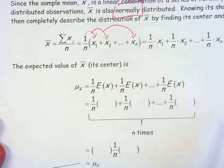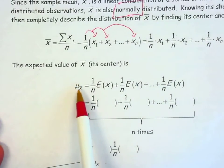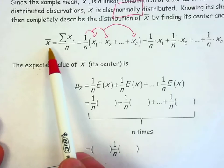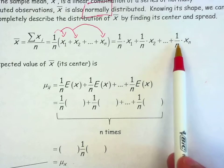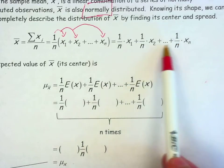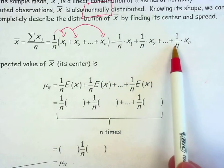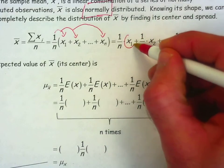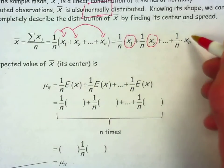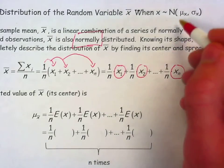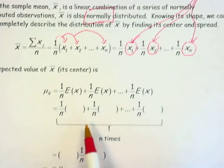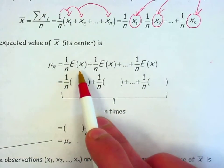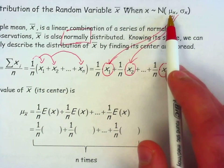For the center, we're going to use the expected value of the mean — mu of x̄, the center of all the sample means. Just like we did in our last unit, I can just plug and chug. I have a combination of x's all multiplied by 1 over n, so I can take x's mean and substitute it in for each term. I have 1 over n times the expected value of x, which is just mu x.